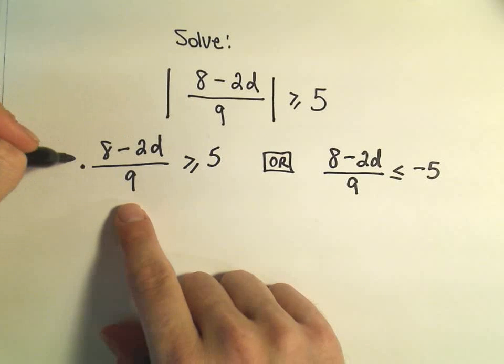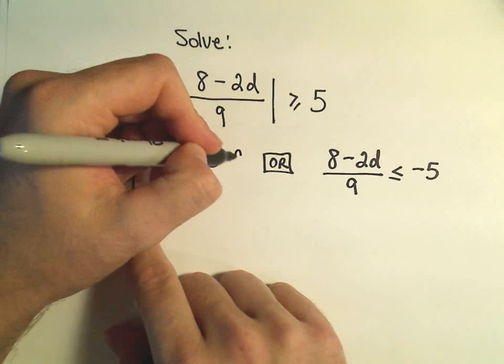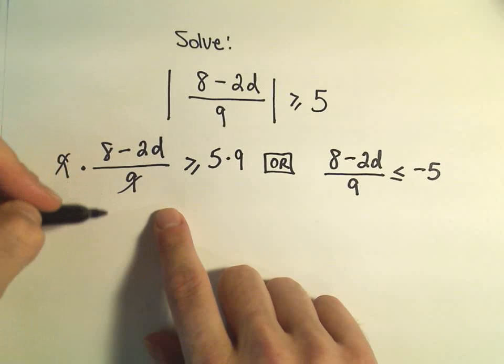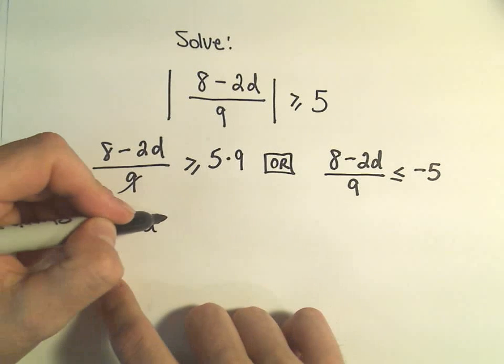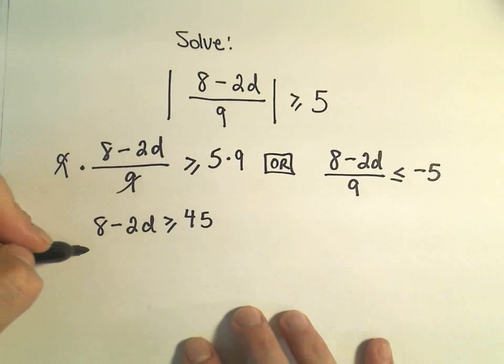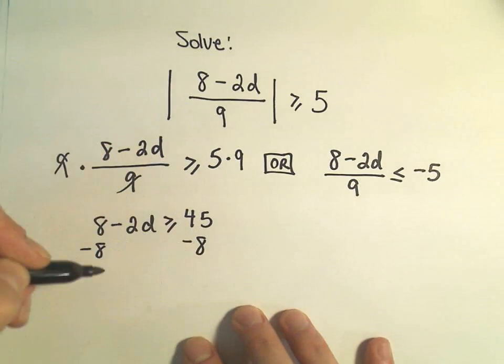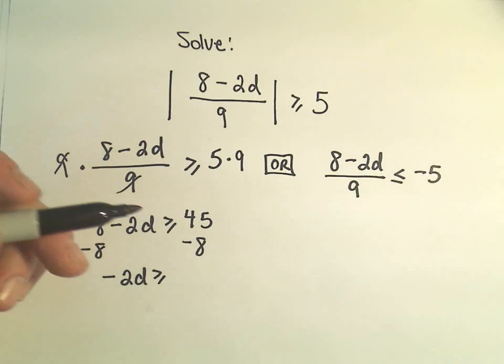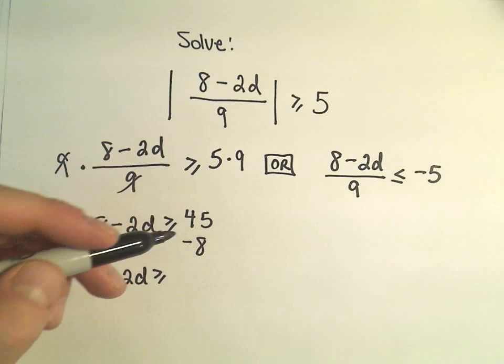So the first thing I'm going to do is multiply by 9 on each side of the first inequality. That will cancel out the 9's on the left and just leave me with 8 minus 2d greater than or equal to 45. I can subtract 8 from both sides. So I'll have negative 2d greater than or equal to 45 minus 8.